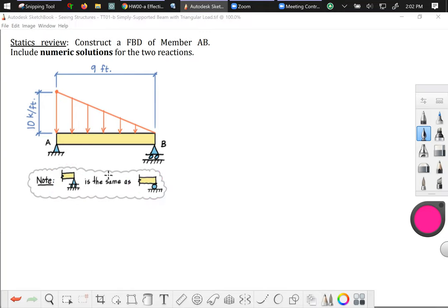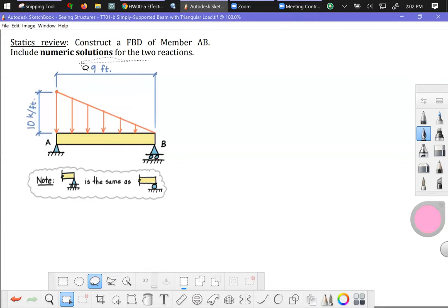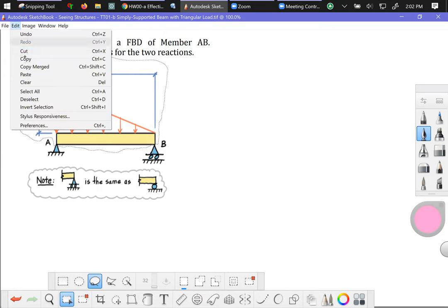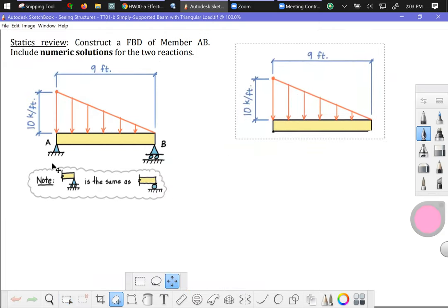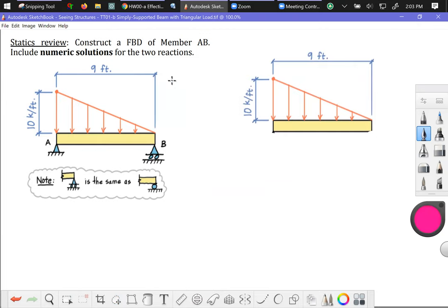What we want to do is free the body from the support. So I'm going to use my tool and disconnect the pin roller at B, disconnect the pin connection at A. I'm going to do a copy merged, edit paste, and put my free body in process over to the right.